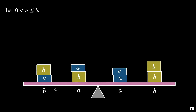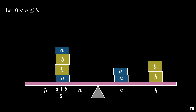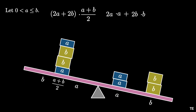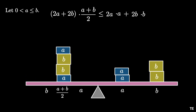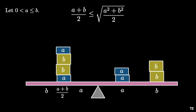Now move the two left weights of size (a + b) equidistant to the midpoint (a + b)/2. This doesn't change the net moment of the system. The left moment is (2a + 2b)·(a + b)/2, and the right moment is 2a·a + 2b·b. Because the system rotates clockwise, the left moment is less than or equal to the right moment. This inequality can be rewritten as (a + b)² ≤ 2(a² + b²), which means (a + b)/2 ≤ √((a² + b²)/2). This is the arithmetic mean–quadratic mean inequality.